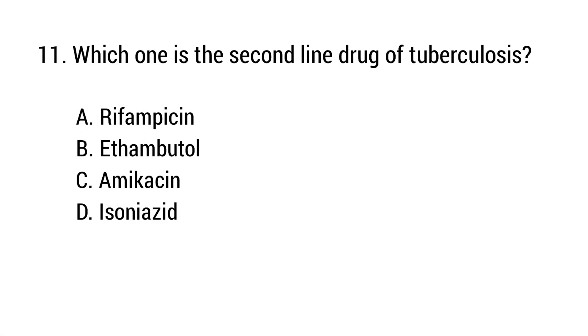Question number 11. Which one is the second line drug of tuberculosis? The right answer is option C: Amikacin.